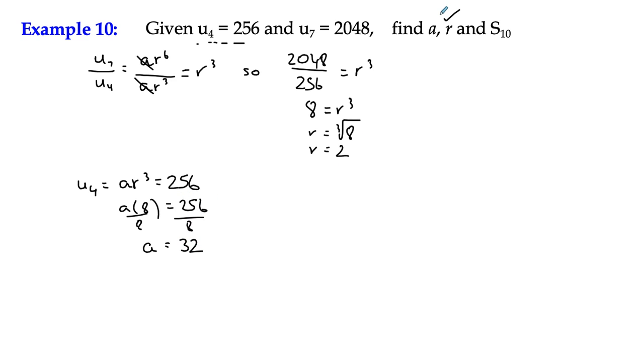We've got r and we've got a, and now we have to find the sum of the first 10 terms of the series. So S10—well, let's write down the formula Sn. We're told that r equals 2. That means r is greater than 1.